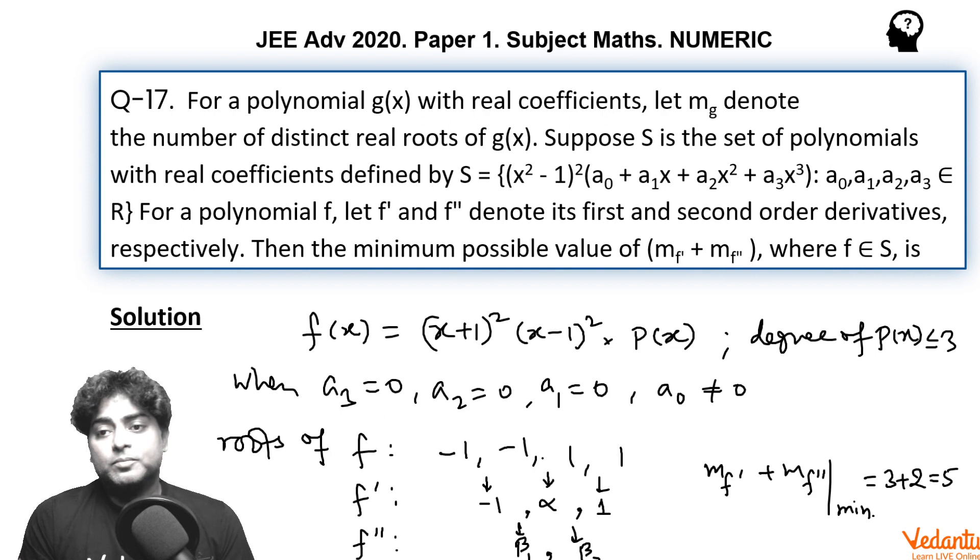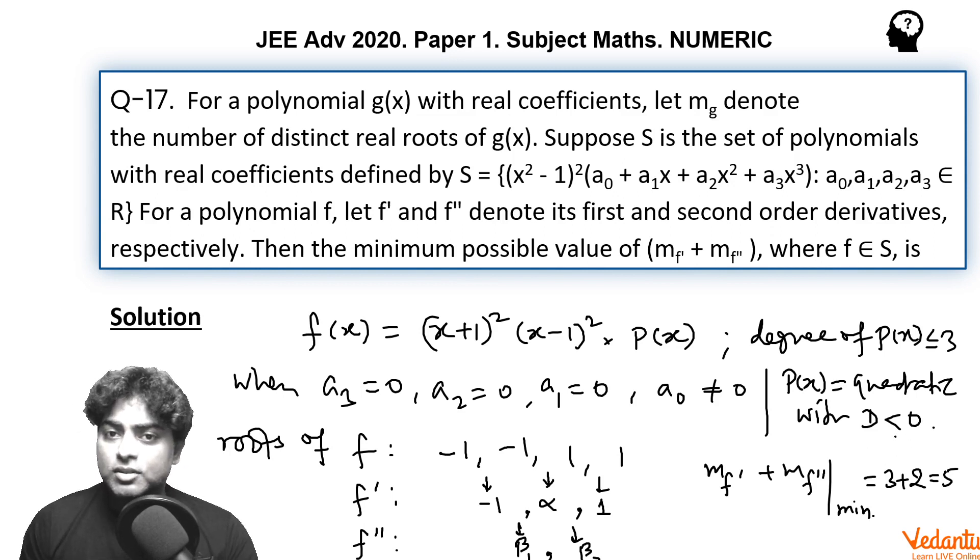Let us explore other cases where again the answer is 5. That case is when we take the second factor, the polynomial P(x), as a quadratic with discriminant less than 0, meaning having no real root. In case when P(x) is quadratic with discriminant negative, again you will get P(x) having no real root, and so 5 as the answer, same as in the first case.